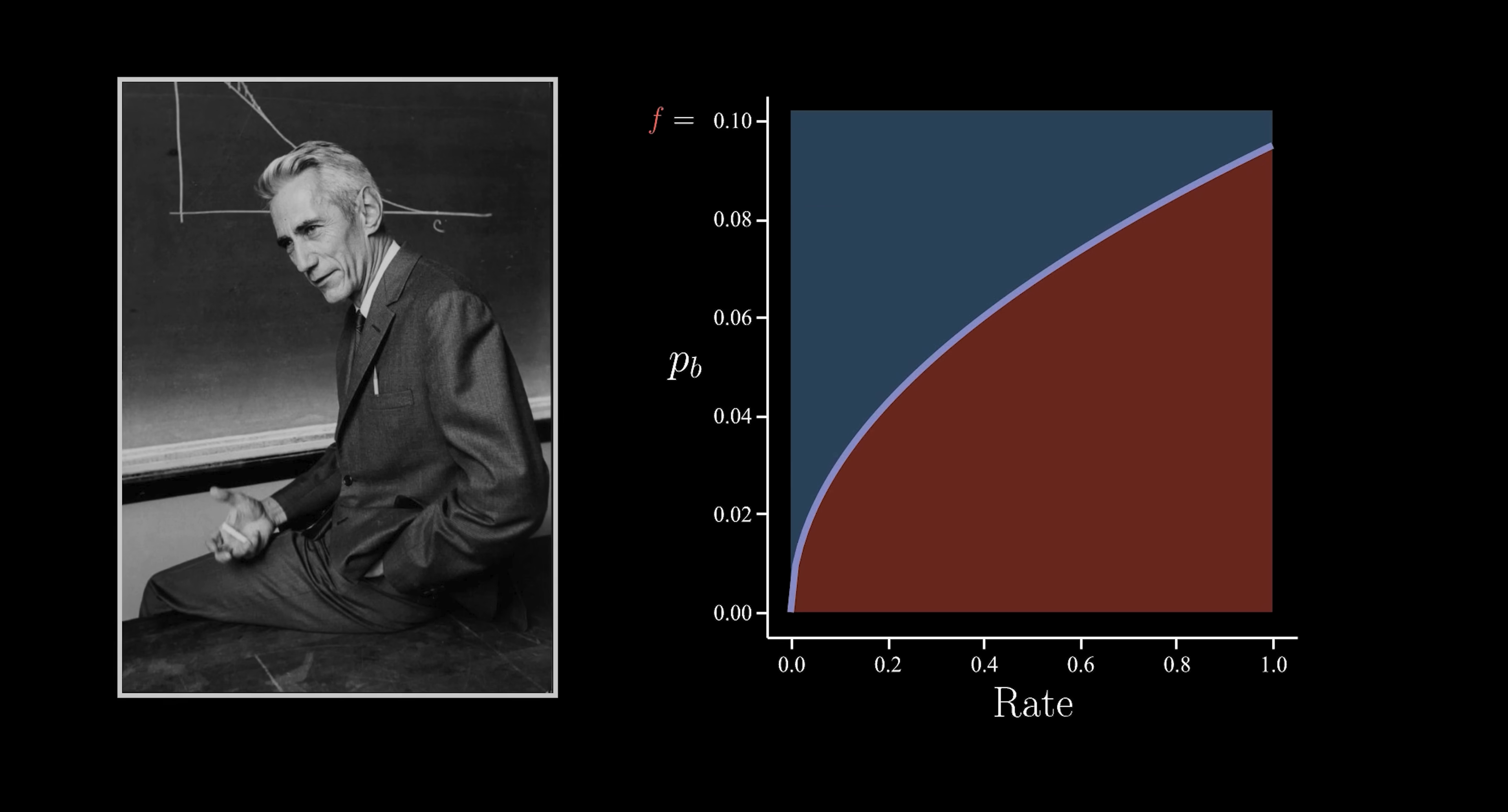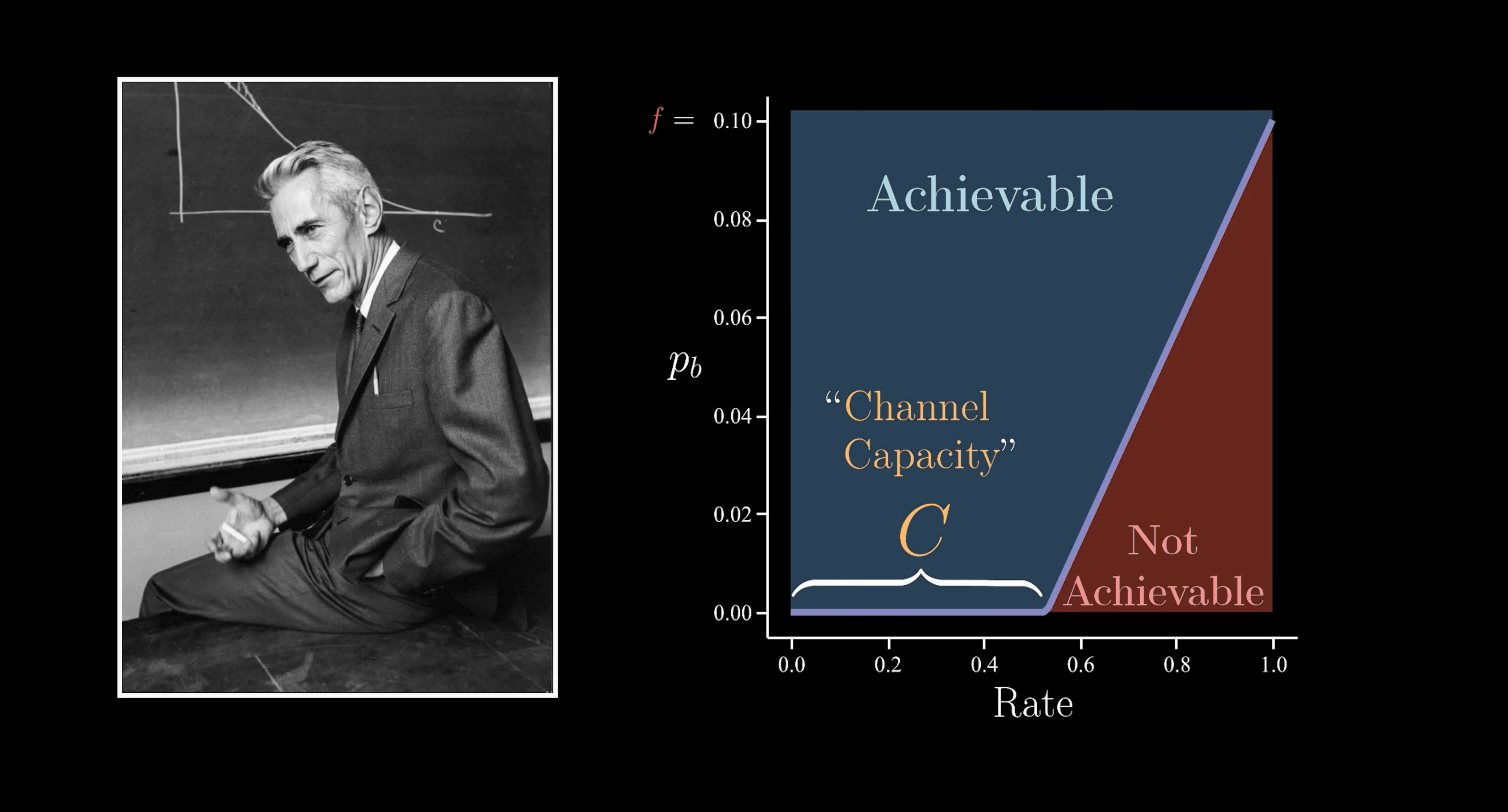In 1948, Claude Shannon surprised everyone by proving it looks like this, where this length is known as the channel capacity C, and it's what makes this result remarkable. What this says is, you can communicate at an arbitrarily small bit error probability at a rate up to the channel's fundamental limit C.